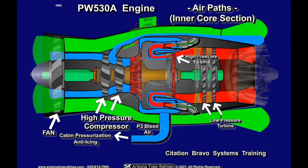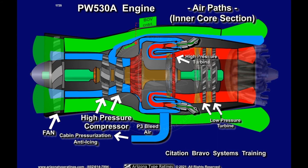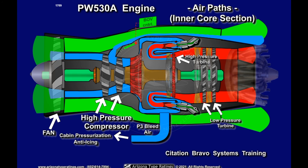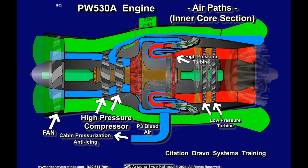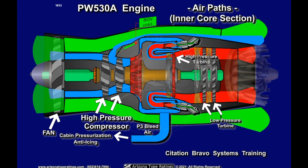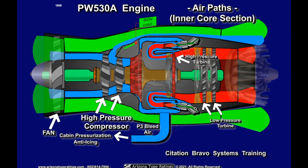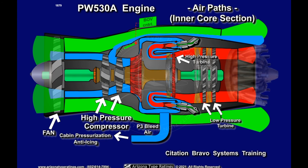As the airplane climbs, the air becomes thinner. As a result, the fan becomes less effective, since the air being accelerated by the fan is very light in weight. Therefore, the core of the engine provides the majority of the thrust up high where the air is very thin.